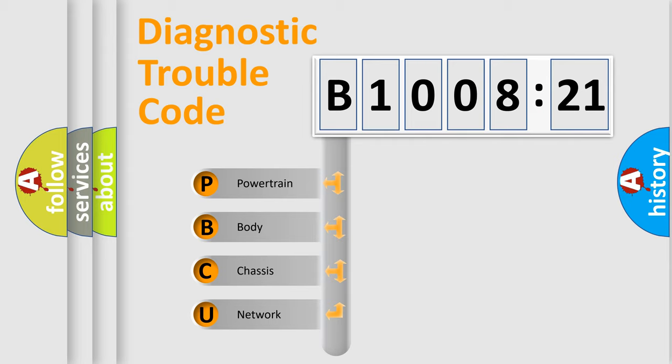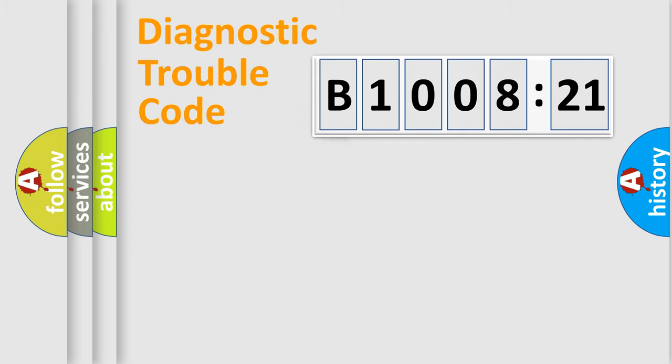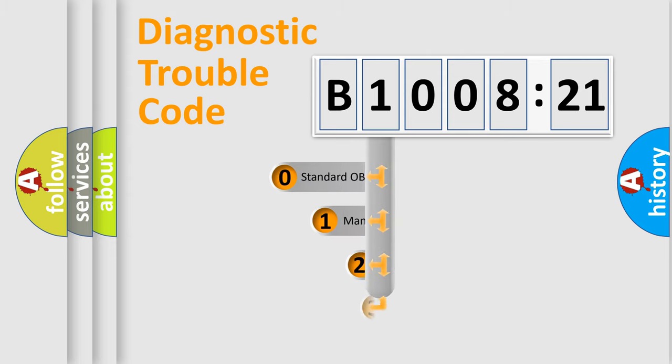We divide the electric system of the automobile into four basic units: Powertrain, Body, Chassis, and Network. This distribution is defined in the first character of the code.